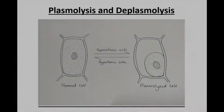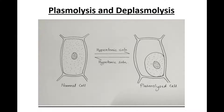In plant cells, an interesting phenomenon takes place when they are placed in a hypertonic solution. The protoplasm begins to shrink away from the cell wall as there is a net movement of solvent from the cell to their external surroundings, a process known as exosmosis. This process of shrinkage of a plant cell protoplasm due to exosmosis is known as plasmolysis.